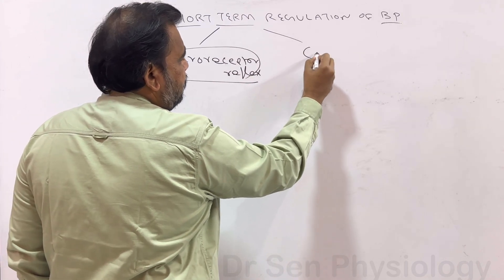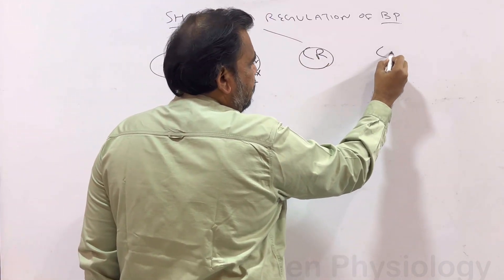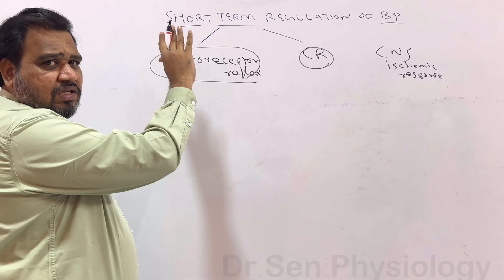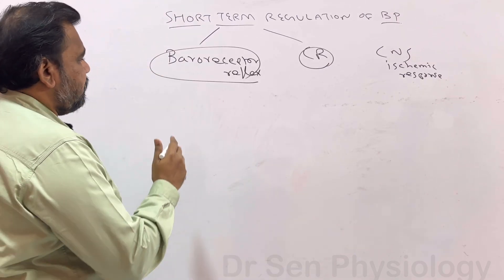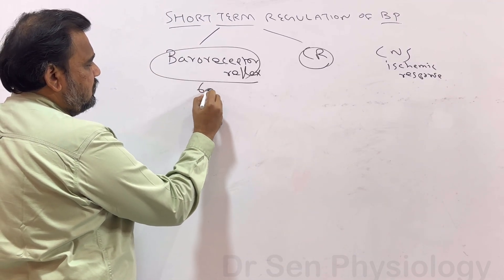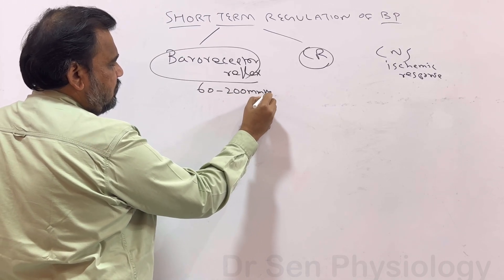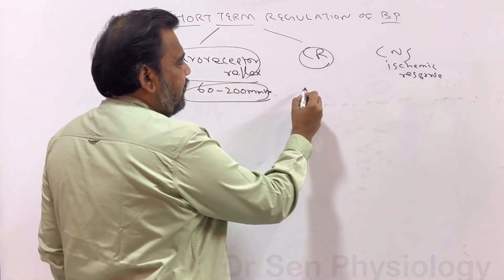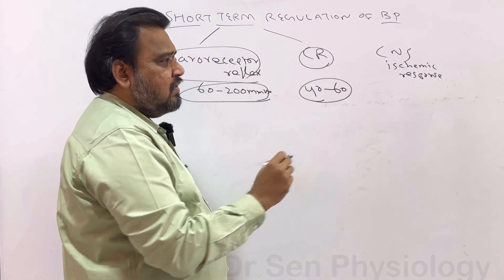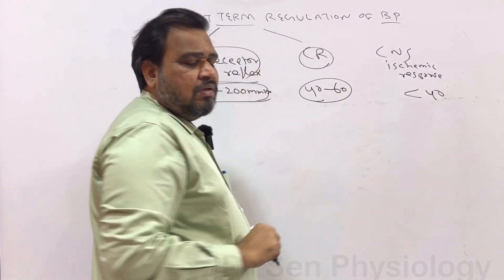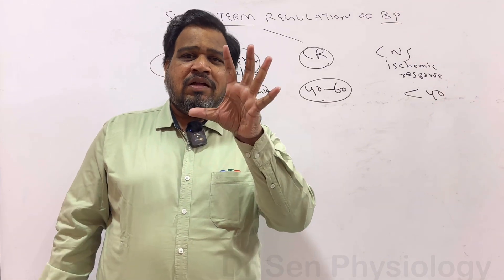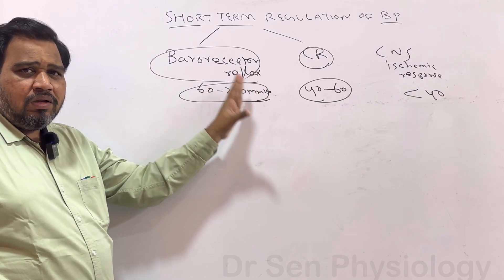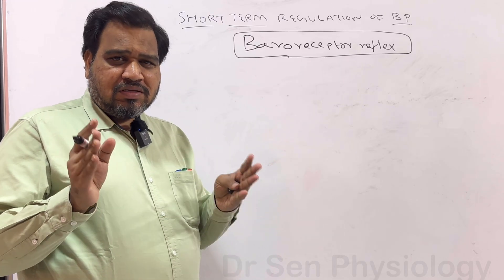Apart from baroreceptor, we have chemoreceptor and CNS ischemic response as short-term regulations of blood pressure. Baroreceptor reflex acts within seconds to minutes. The range is when the mean arterial pressure is 60 to 200 mmHg. When BP fluctuates from 60 to 200 mmHg, baroreceptor reflex acts. When it is 40 to 60, chemoreceptor reflex acts. When it is less than 40, CNS ischemic response acts.